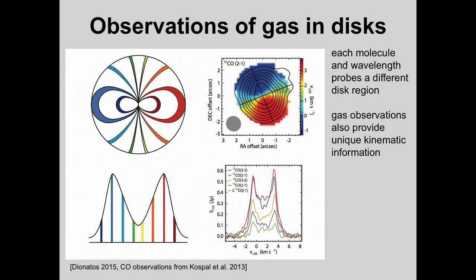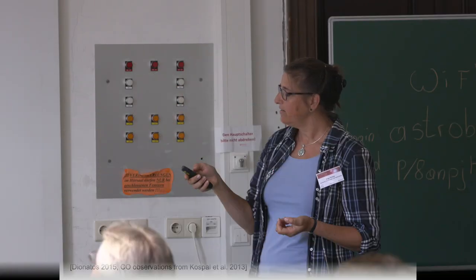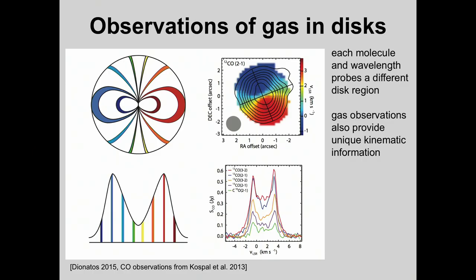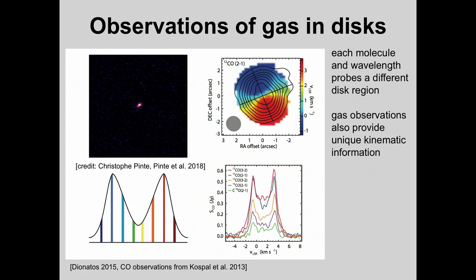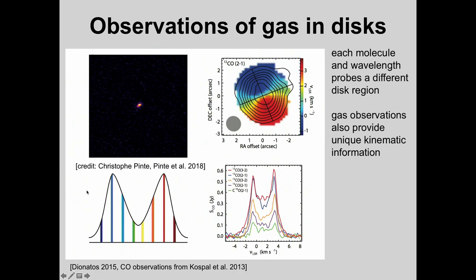With ALMA we now get full spatial resolution and velocity resolution simultaneously, producing what we call channel maps. Stepping through the velocity range from blue-shifted to red-shifted, we see which parts of the disk light up at each velocity. This is extremely powerful because we can measure not only the velocity shift, but also the spatial location where gas is emitting at that velocity shift, giving us a complete kinematic picture of the disk.